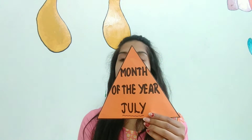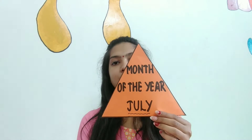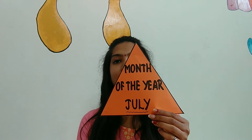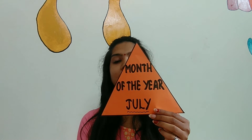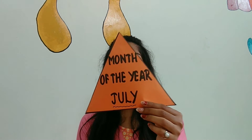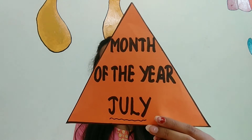Now what is the month of the year? The month of the year is July. Repeat everyone. What is the month of the year? The month of the year is July. The month of the year is July.